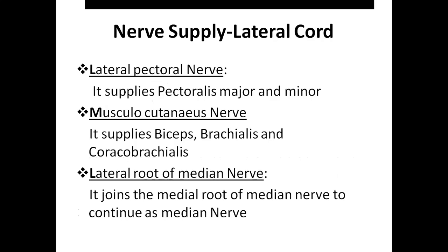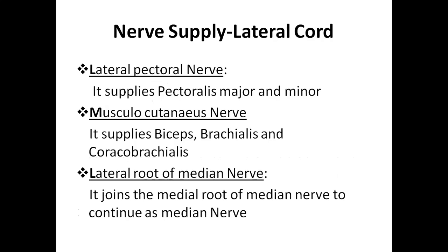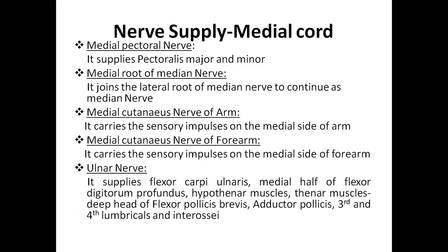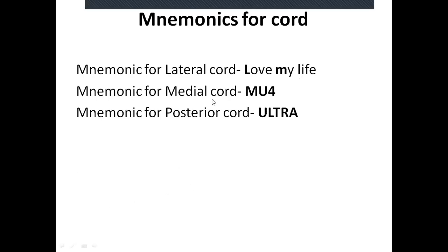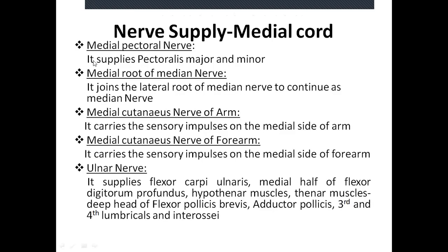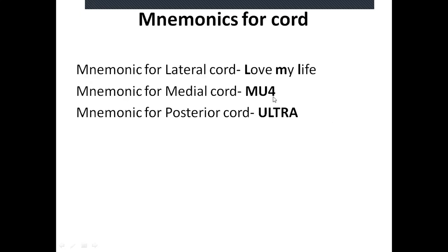The mnemonic for the lateral cord branches is LML — we can remember it as 'love my life.' The mnemonic for the medial cord is 4M and 1U — we can remember it as 'mu4,' since all branches start with M except the ulnar nerve.